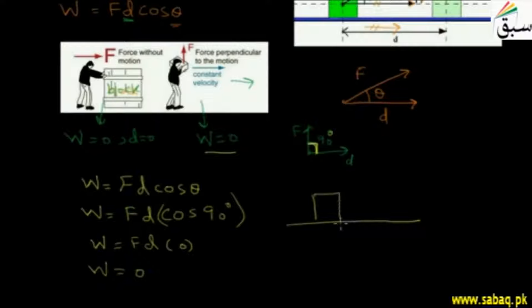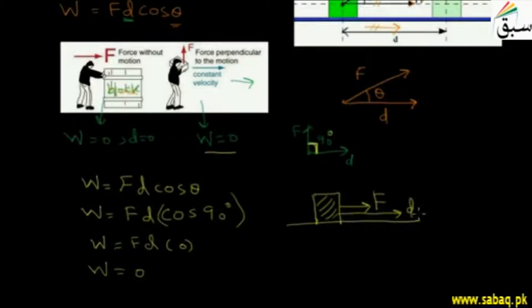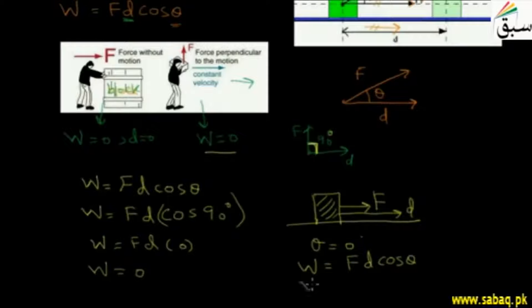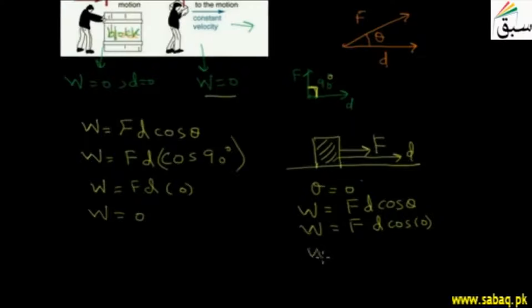Let's take another example. I have a block and I am going to move it in the forward direction, applying force in this direction, and my displacement is also in this direction. The force and displacement are parallel, so the angle is zero. When I calculate the work done as F D cos theta and put cos 0° = 1, we get work done = F × D × 1 = F D. This is the maximum work done, which occurs when force and displacement are parallel.